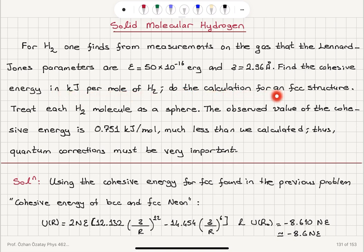Find the cohesive energy in kJ per mole of H₂. Do the calculation for an FCC structure. Treat each H₂ molecule as a sphere. The observed value of the cohesive energy is 0.751 kJ/mol, much less than we calculated, thus quantum corrections must be very important.